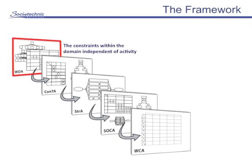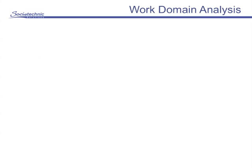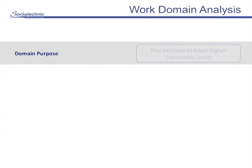We'll be applying the Cognitive Work Analysis framework a few stages at a time. Initially we start with what's called Work Domain Analysis, which lists the constraints within the domain independent of activity. Kicking off with what's termed the abstraction hierarchy, we start at the top and ask ourselves: what's the overall domain purpose? In this case, the domain purpose — the overall reason for being of the system — is to plan missions to enact higher commands and intent.